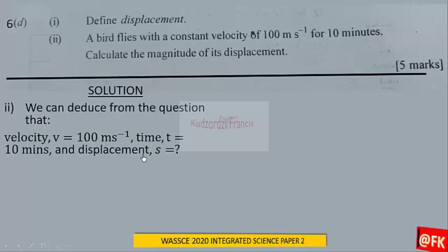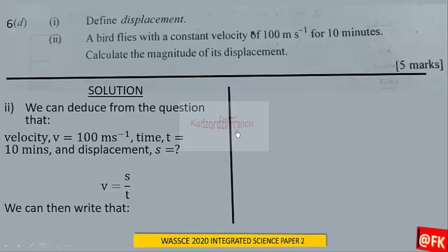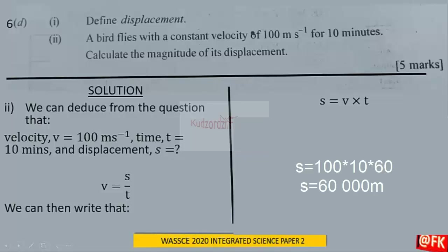From the equation of motion, velocity = displacement / time, so displacement = velocity × time. By substitution, s = 100 × 10 × 60 seconds — we convert 10 minutes to seconds by multiplying by 60 — giving us 60,000 meters. So the displacement is 60,000 meters.